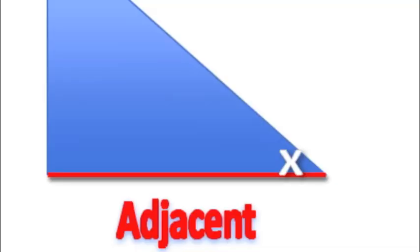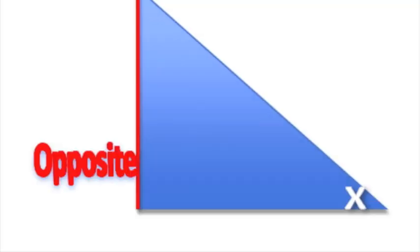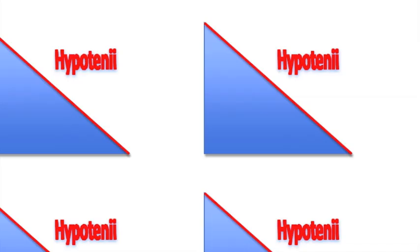Okay, so first you need to know the names of the sides: there's adjacent, opposite, and hypotenuse. Now let's continue with the next step.